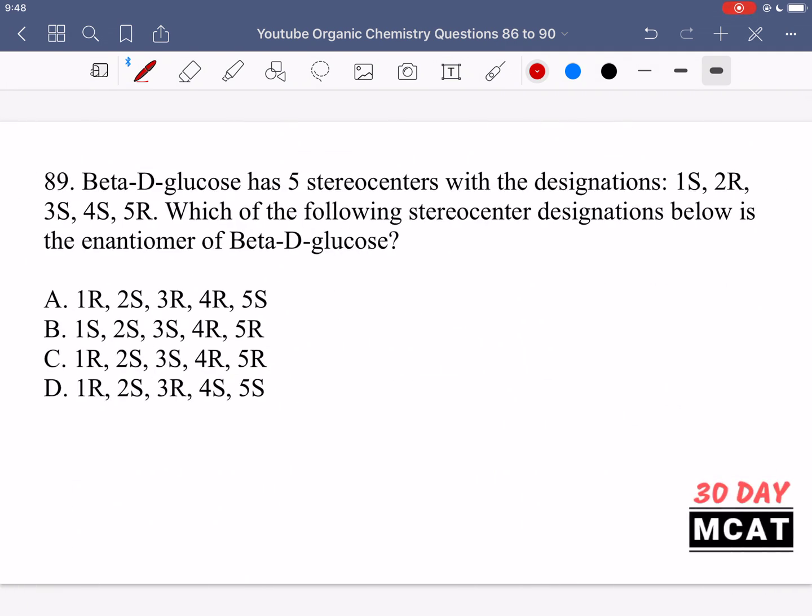In question 89, beta-D-glucose has five stereocenters with these designations. Which of the following stereocenter designation is considered the enantiomer? So if we want to find the enantiomer of something, that means that its stereochemistry is inverted at every chiral center. So that means it's a complete mirror image. For that we need to have at every stereo center the opposite stereochemistry.